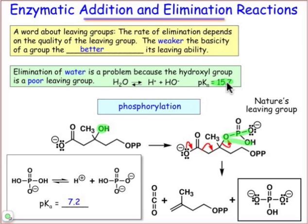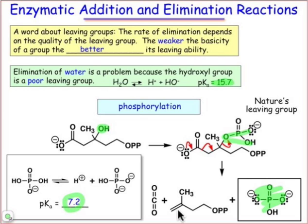Compared to 15.7, which is the pKa of the conjugate acid of hydroxide, the pKa of the conjugate acid of phosphate is 7.2. And so that's a much weaker base — phosphate is a much weaker base than hydroxide — and so we've improved the leaving group ability quite a bit. And in this case, there's a decarboxylation. You can follow the curved arrows. Decarboxylation gives rise to the formation of a double bond, which is usually what we're looking for in elimination reactions. So decarboxylation, double bond formation, and the loss of the leaving group phosphate.